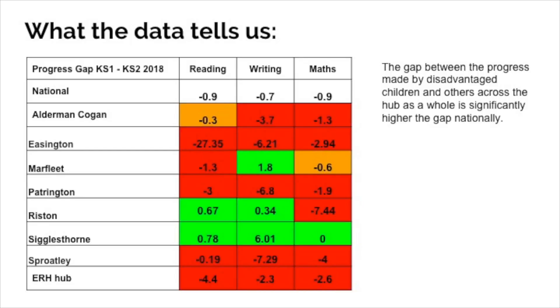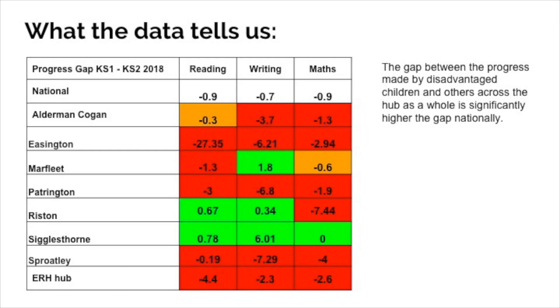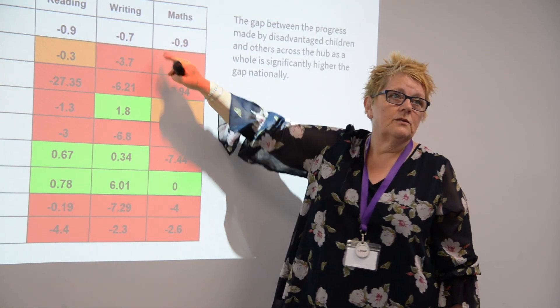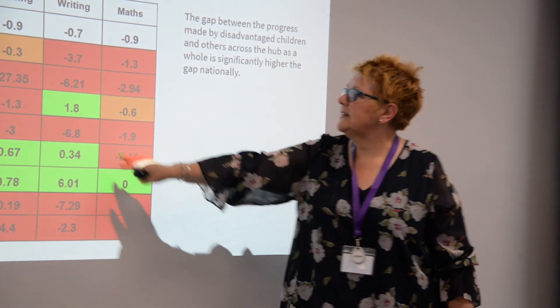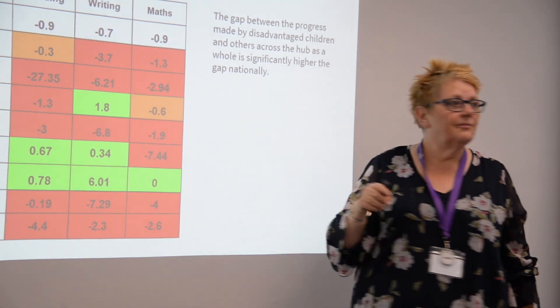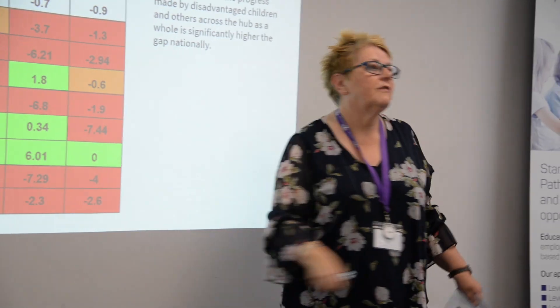As a whole, what we need to do is focus on our disadvantaged children and what we're going to do about it. This is what the data says, and you can see that some schools are doing a better job at meeting progress data — not attainment data. It's the gap between that achieved by children with disadvantage and that achieved by their peers. Nationally there is a gap, although in some cases our disadvantaged children are doing as well or better than our non-disadvantaged children, but generally as a hub there is an issue.